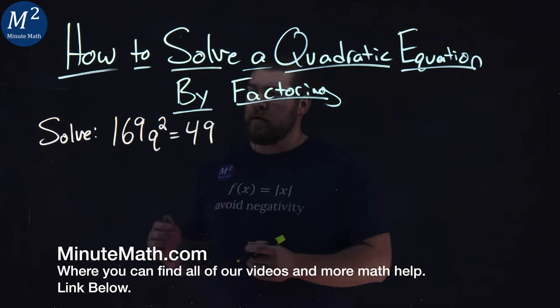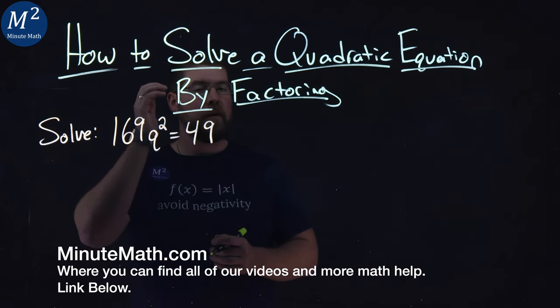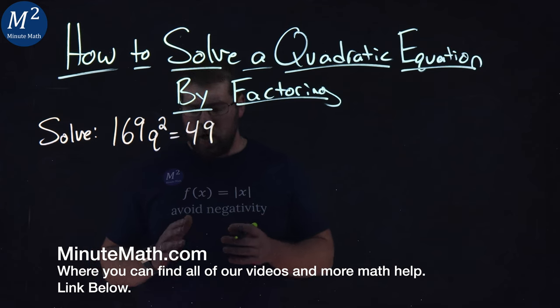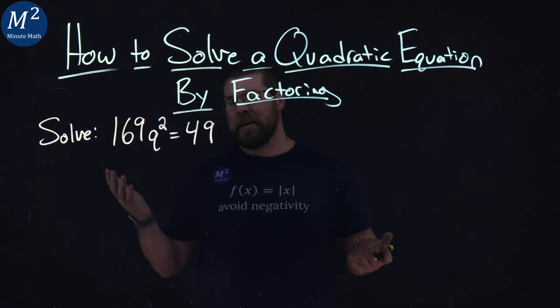We're given this problem right here: solve 169q² = 49. We want to solve this by factoring.